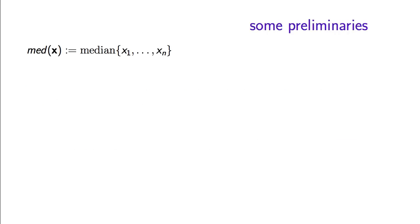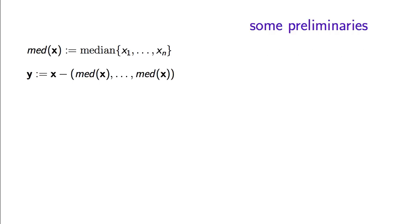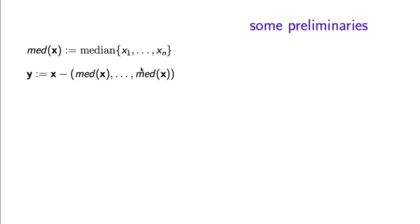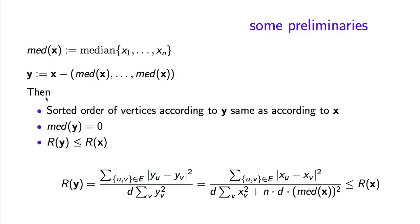Before jumping into the proof of this lemma, we modify vector x slightly. Define the median of x as the element in position ceil(n/2) when x is sorted. Now define a new vector y that equals x minus the median of x in every coordinate. This new vector has the same sorted order as x — it is just a shift — but its median is 0. Crucially, this shift can only decrease the Rayleigh quotient.